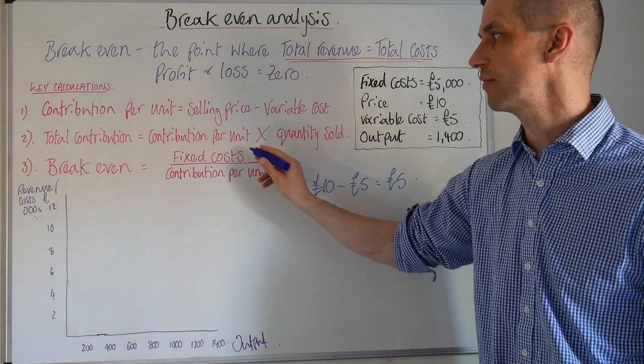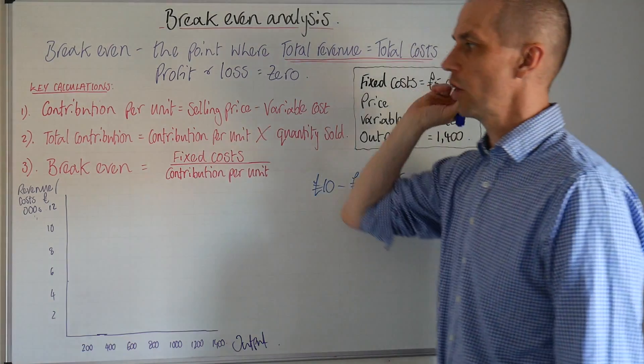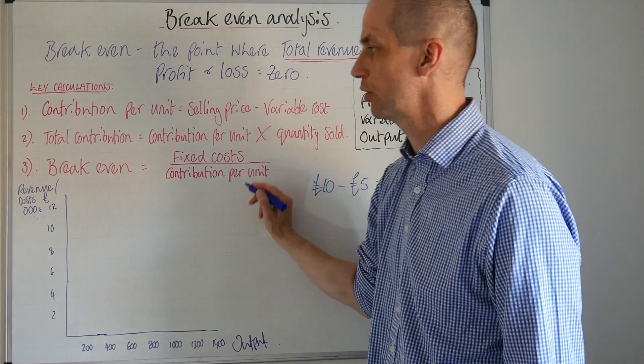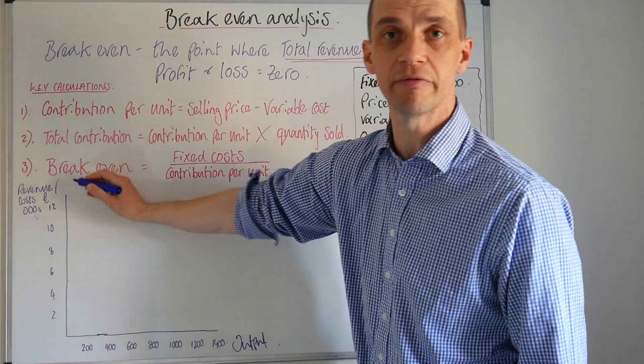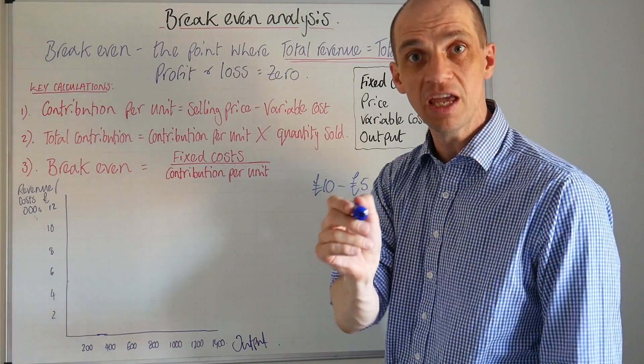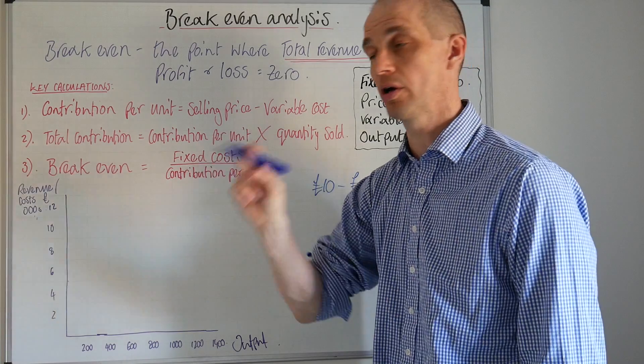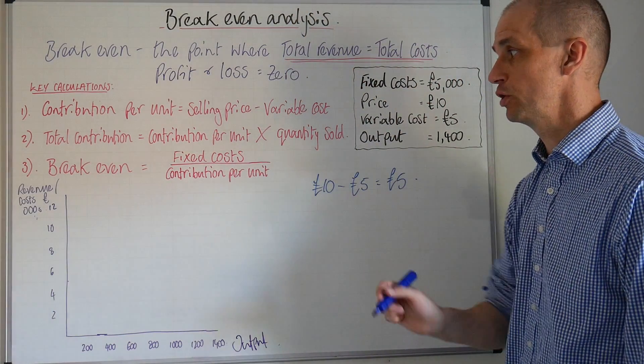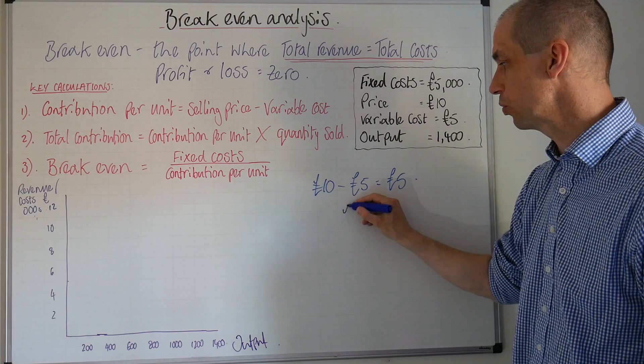Let's have a look at this break-even point. Break-even equals fixed cost divided by the contribution per unit. Now this break-even point is the break-even point when it comes to units sold. We've got our £5 for our contribution per unit.